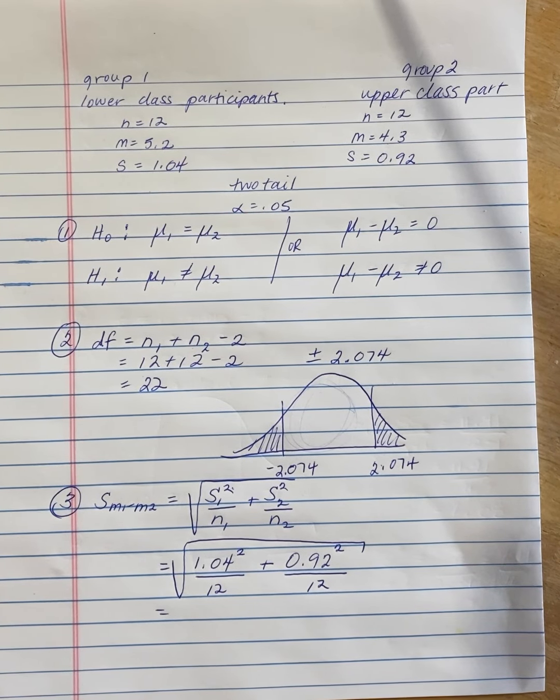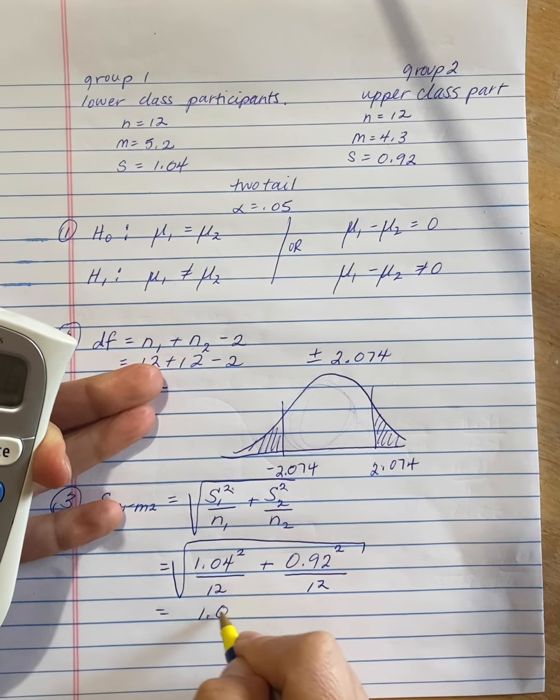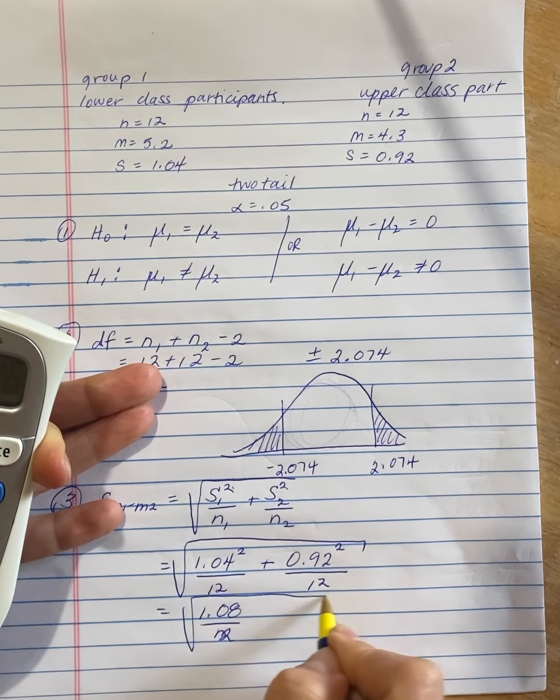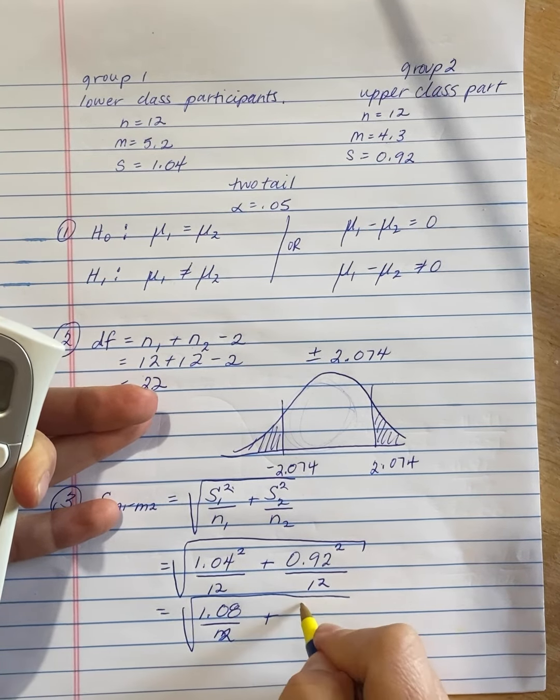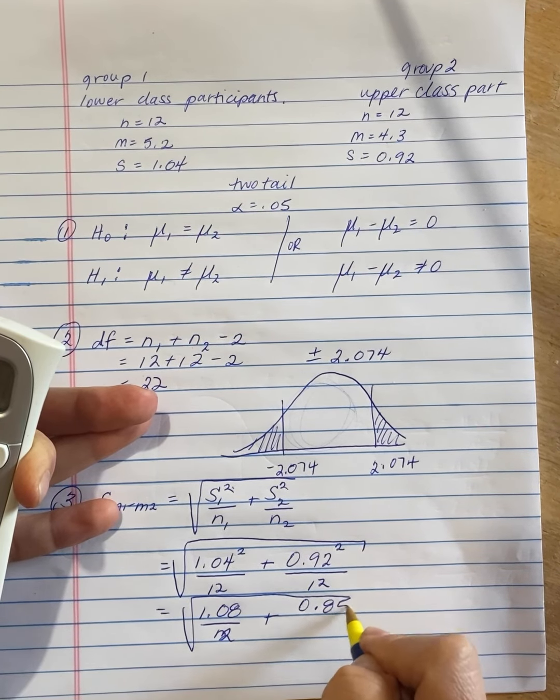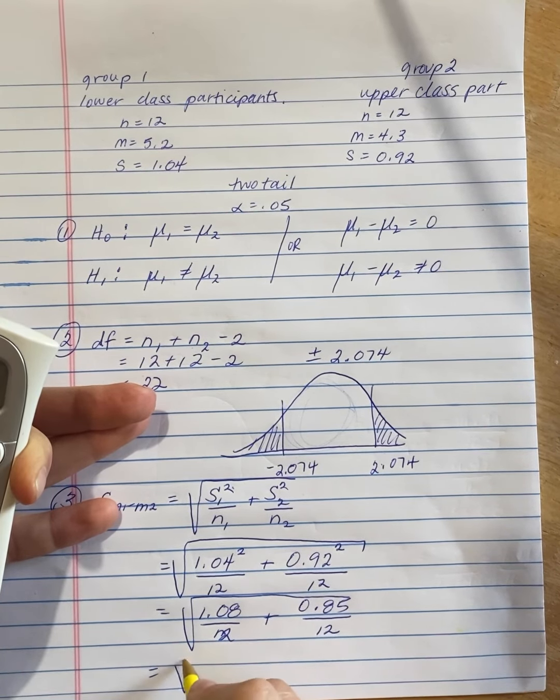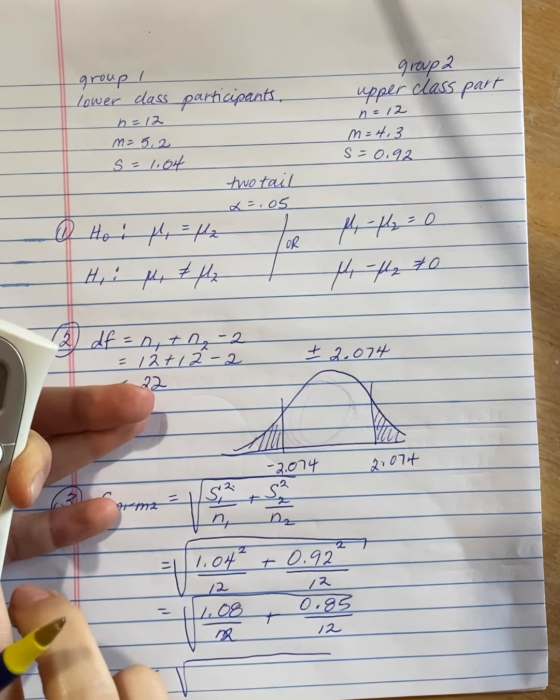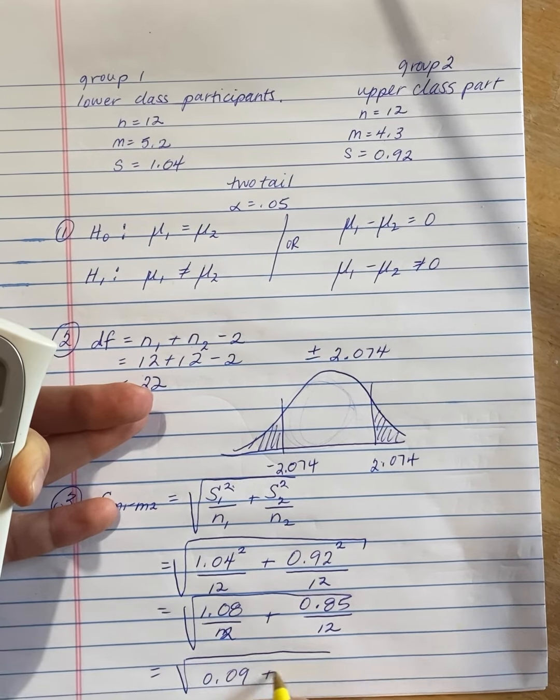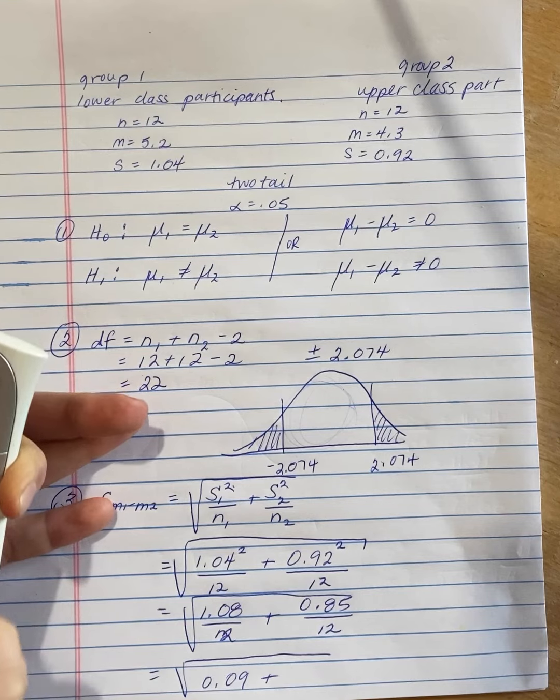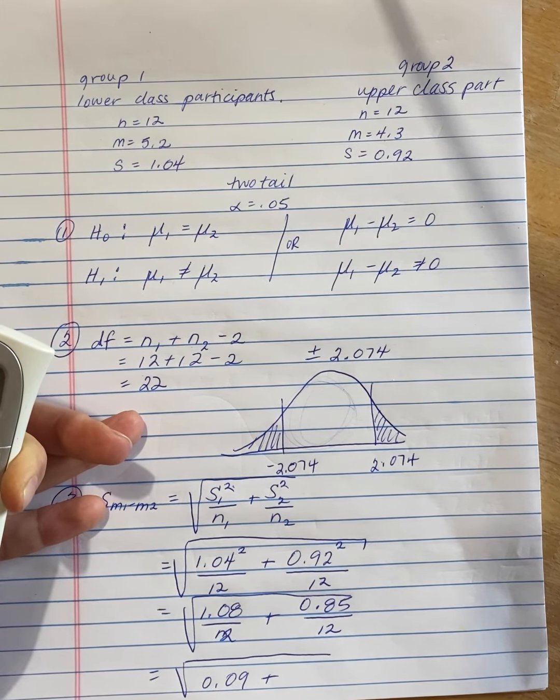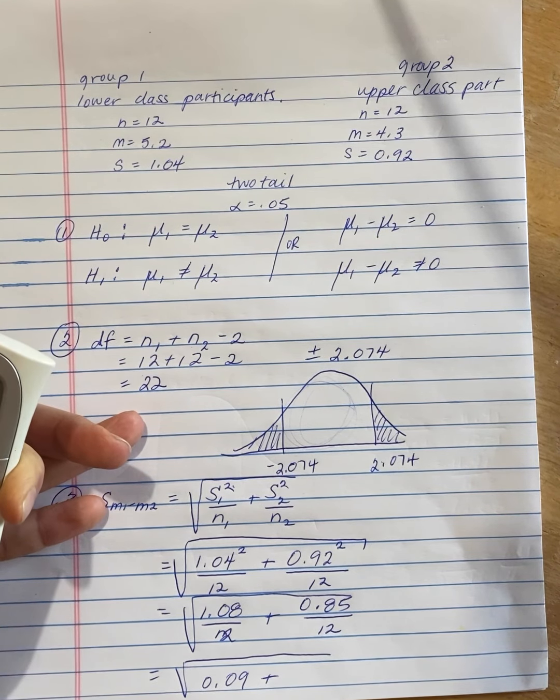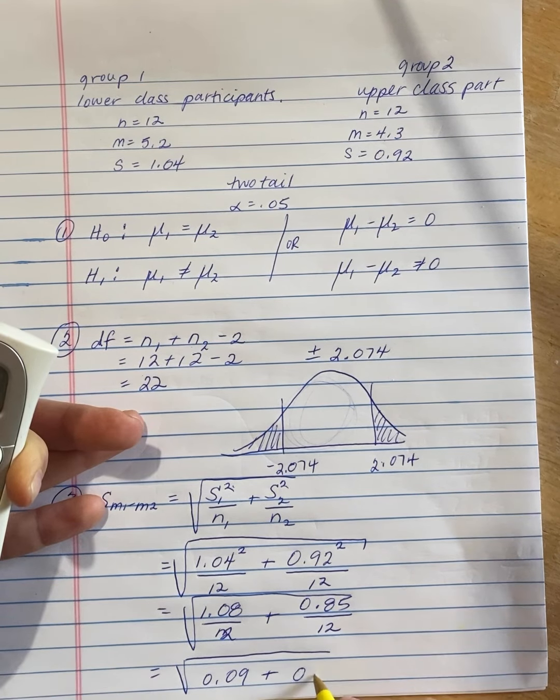So 1.04 squared is 1.08. That still needs to be divided by 12. I haven't done that step yet. And then 0.92 squared is 0.85. And then we'll divide by 12. So what that looks like, 1.08 divided by 12 is 0.09. And 0.85 divided by 12 is 0.07.